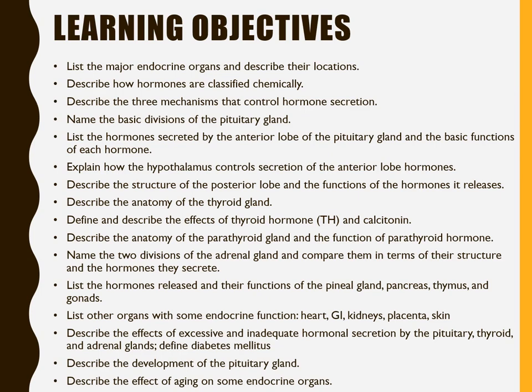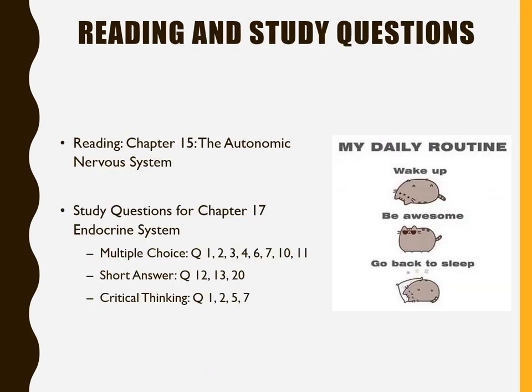Here are the learning objectives for this lecture — pay attention and consider making flashcards for all the glands and hormones. Next time we'll finish the nervous system unit with the autonomic nervous system, covering the sympathetic and parasympathetic systems. Some study questions from the textbook are available for additional practice. Stay awesome and see you next time.